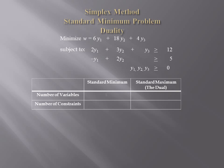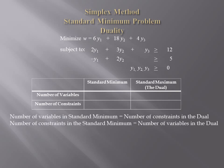The number of variables in this standard minimum problem is 3. That will be the number of constraints in the standard maximum problem. Similarly, the number of constraints in this standard minimum problem is 2, and that will be the number of variables in the standard maximum problem. In general, the number of variables in the standard minimum problem equals the number of constraints in the dual, and the number of constraints in the standard minimum problem will be the number of variables in the dual.